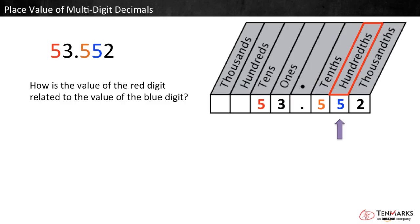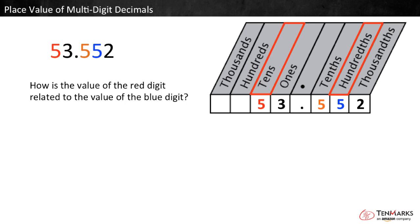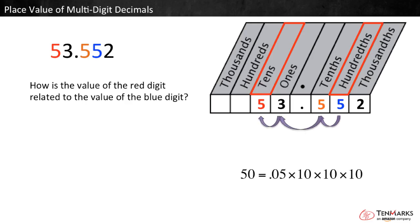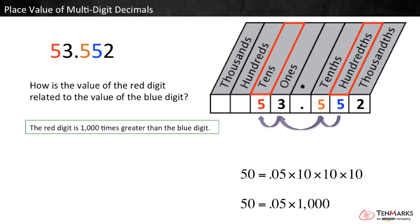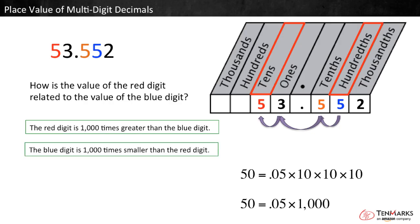How is the value of the red digit related to the value of the blue digit? The red digit is a five in the tens place — it is worth five times ten, or fifty. So how many times larger is fifty than five hundredths? We know a digit's value is ten times greater each time it shifts one place to the left. Moving from the hundredths place to the tens place is three places to the left. Fifty equals five hundredths times ten times ten times ten, or five hundredths times one thousand. So the red digit is one thousand times greater than the blue digit. We can also say that the blue digit is one thousand times smaller than the red digit.